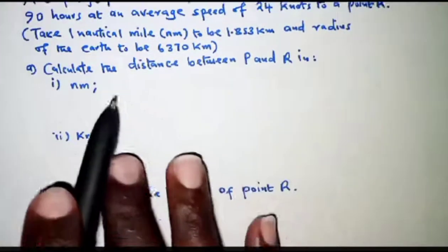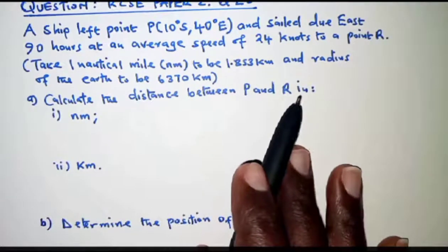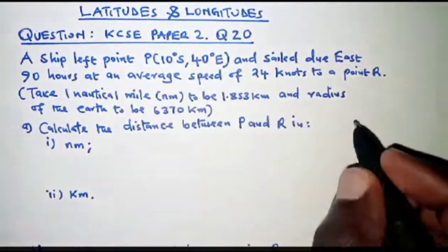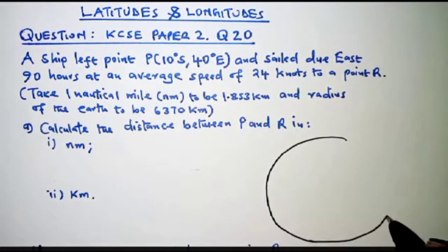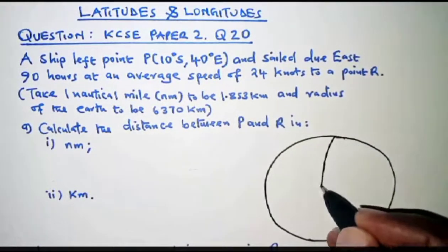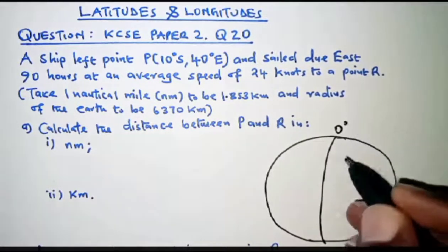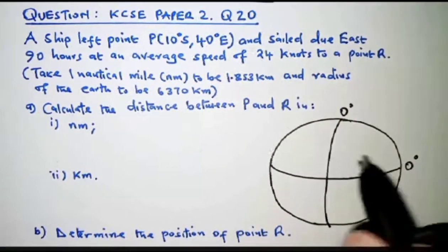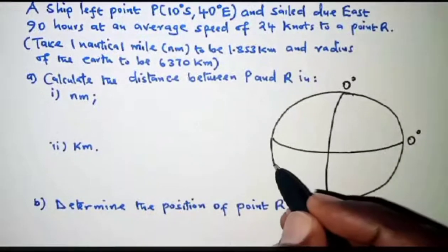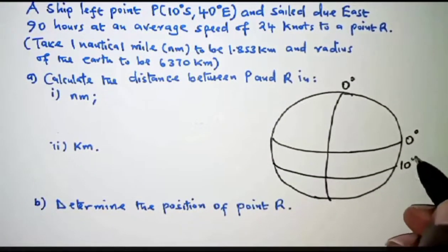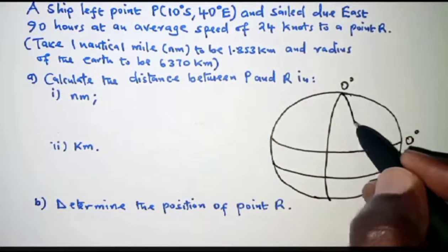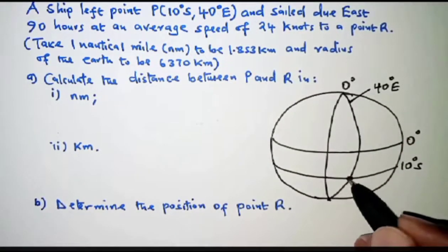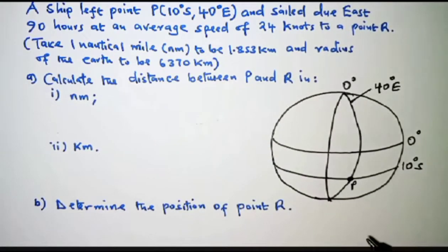For part A, we are required to calculate the distance between P and R. First, we locate the position of P. If this is the globe, we have reference points — the prime meridian and the equator, both at zero degrees. Point P is on latitude 10 degrees south and longitude 40 degrees east. Where the latitude and the longitude meet, that is the position of point P.